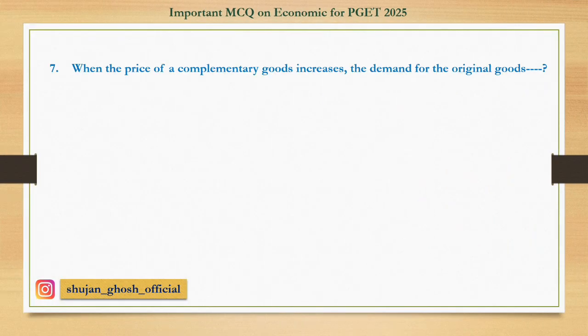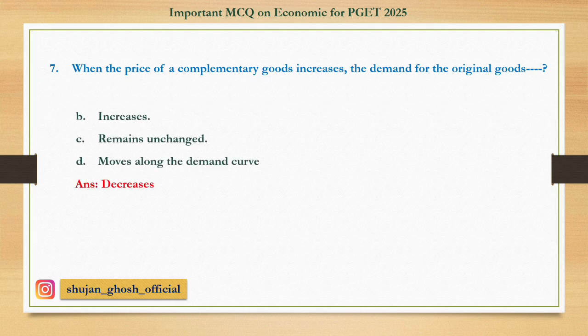Question number seven: When the price of a complementary good increases, the demand for the original good — option A: decreases; B: increases; C: remains unchanged; D: moves along the demand curve. Answer: decreases.